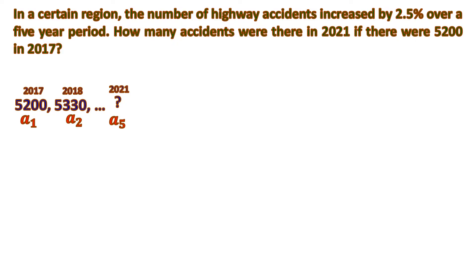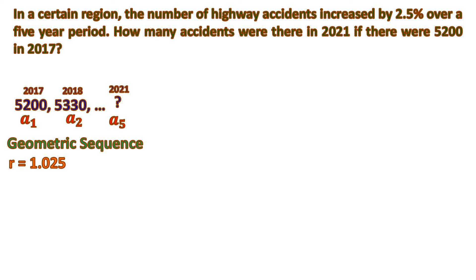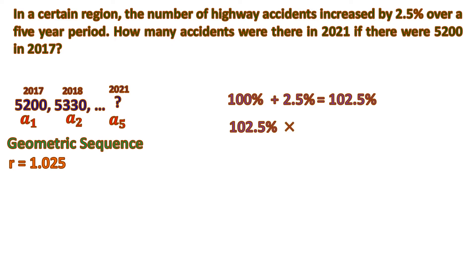This is actually a geometric sequence. Something multiplies 5,200 to make it 5,330, which indicates 2.5%. So the common ratio is 1.025. That's 5,200 times 1.025 equals 5,330. You might wonder why there is a 1. So let me explain: 100% serves as the original amount of 5,200, and you're going to add 2.5% from it to get the next term. So all in all that's 102.5%. We don't multiply by the percentage directly, so you need to change it to decimal by dividing by 100, giving 1.025.